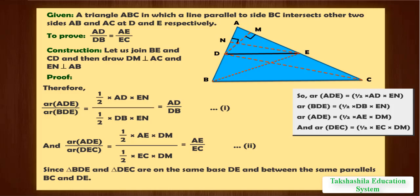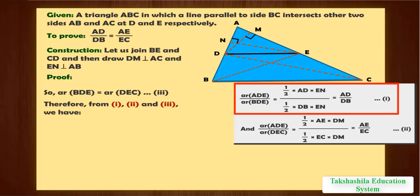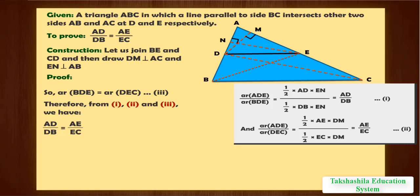Since triangle BDE and triangle DEC are on the same base DE and between the same parallels BC and DE, area BDE equals area DEC. This is equation 3. Therefore, from equations 1, 2, and 3, we have AD upon DB equals AE upon EC.